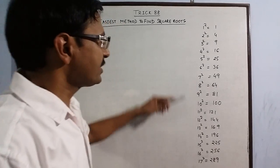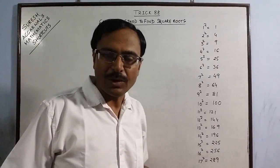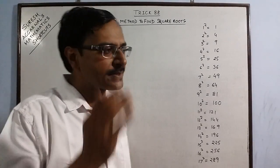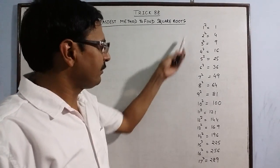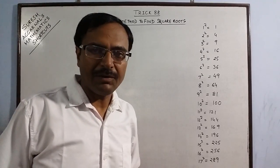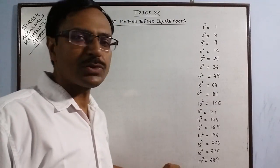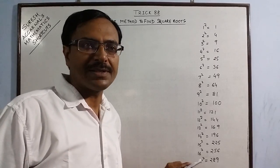Now for this method you need to know the squares of some small numbers, say up to 20 or even up to 15, 16, 17 will solve the purpose. So I have written the squares of up to 17 here for your convenience.